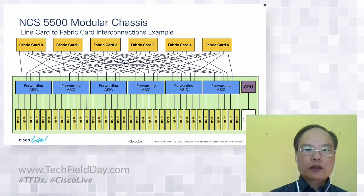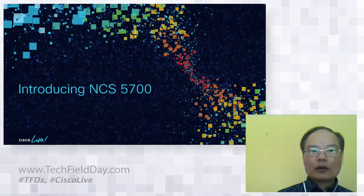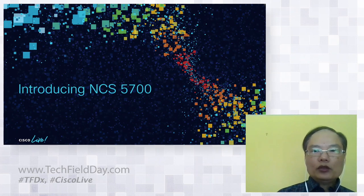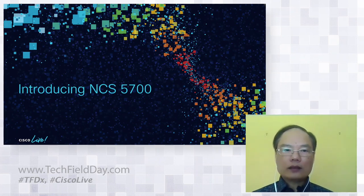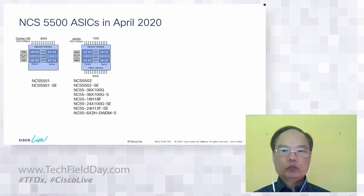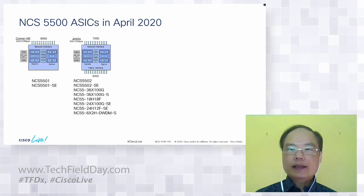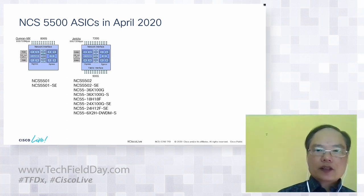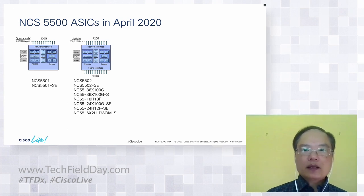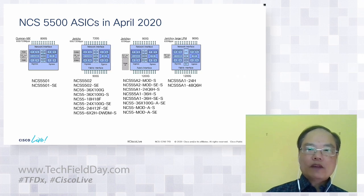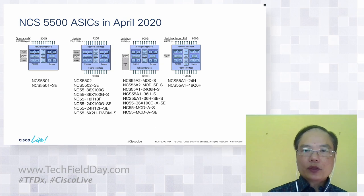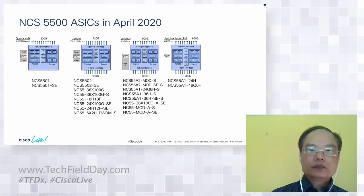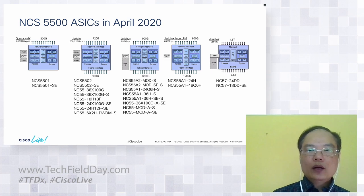The full mesh connection is now completed. We will now introduce the two new NCS 5700 line cards into the NCS 5500 family. A brief history on the NPU used in NCS 5500: the earliest fixed chassis and line cards are based on the Qumran MX and Jericho. Then we have many more fixed chassis and line cards based on Jericho Plus and a large LPM version of Jericho Plus. Today, we will introduce Jericho 2.